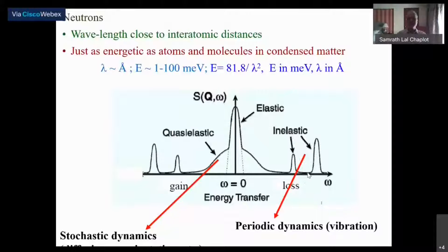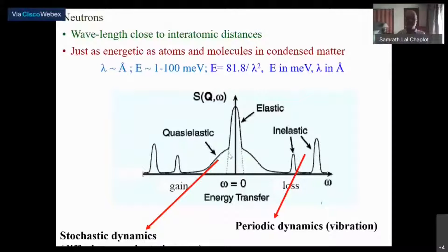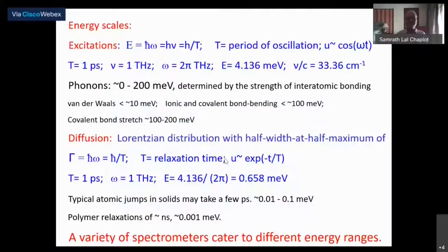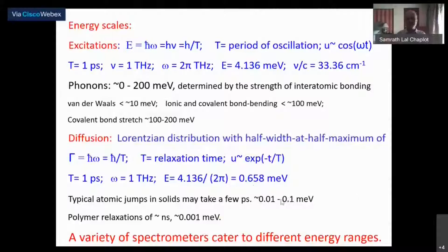Inelastic scattering occurs at finite energies in energy loss mode or energy gain mode for neutrons, which can occur at any energy. The stochastic dynamics occurs around zero energy transfer and has a Lorentzian-like distribution. It could be something different also but most of the time it is Lorentzian. This is the range of energies that neutron scattering can be used for.